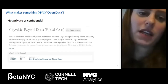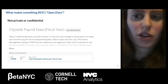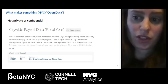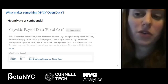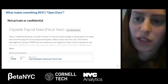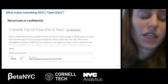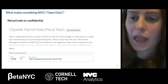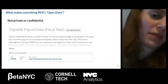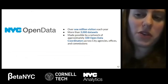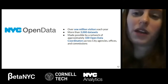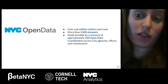Another criteria is that the data cannot be private or confidential. Datasets are closely reviewed for personal information before being posted publicly. In a few instances where there's an important reason for the public to have access to otherwise private information, the dataset can be made public. For example, a dataset of city employee names and salaries — called the citywide payroll data — is made public, but something containing personal home addresses would not be on open data. As of 2022, the NYC Open Data website contains more than 3,000 datasets and billions of rows of data.